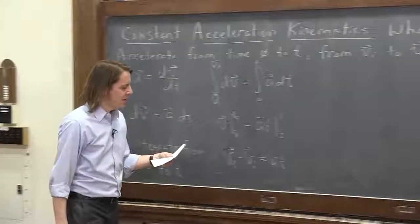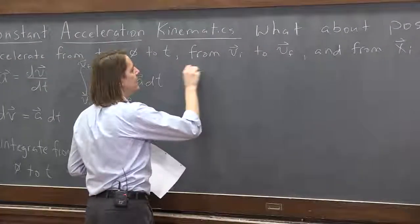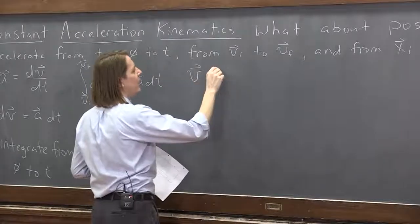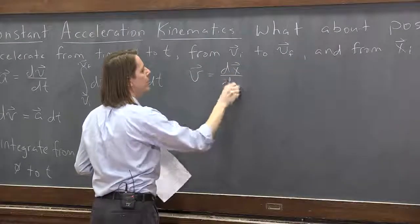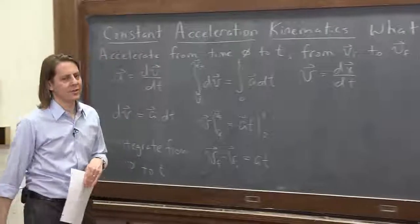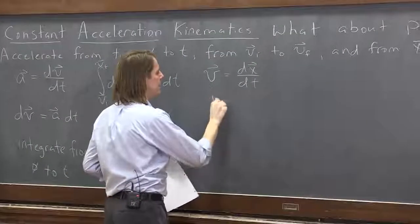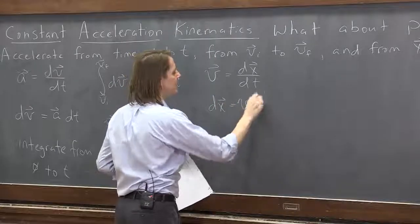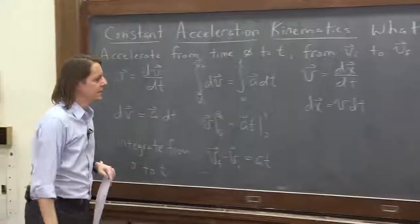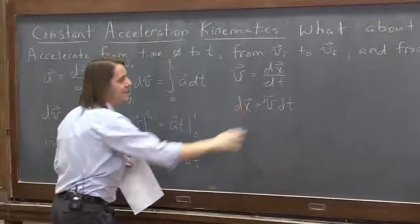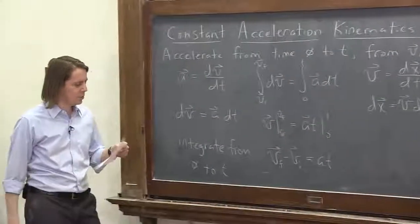So if we want to get to position, now we go to v. The instantaneous velocity is the derivative, the time derivative of the position, dx dt. Same thing, turn it around and say dx equals vdt. All right? That's just d equals vt, really. The old equation you know and love.